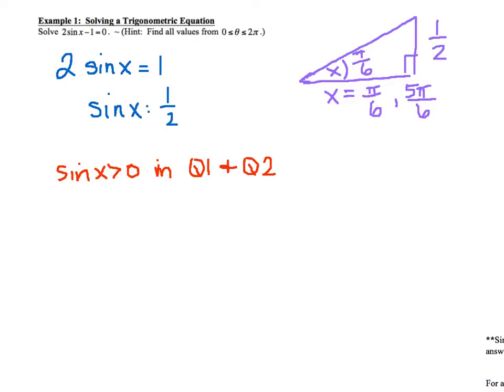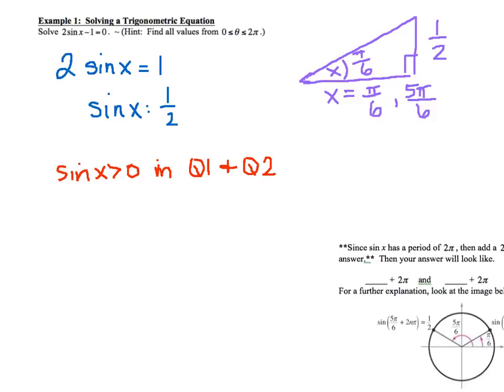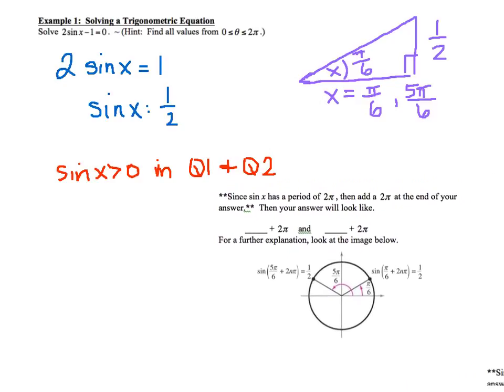Now, this is not how you write your final answer because you know you can go around your circle numerous times. And so since it doesn't say in the actual directions here, it says just to solve, so you have to find all your values. Well, every time you go around your circle, you're going a distance of 2 pi.